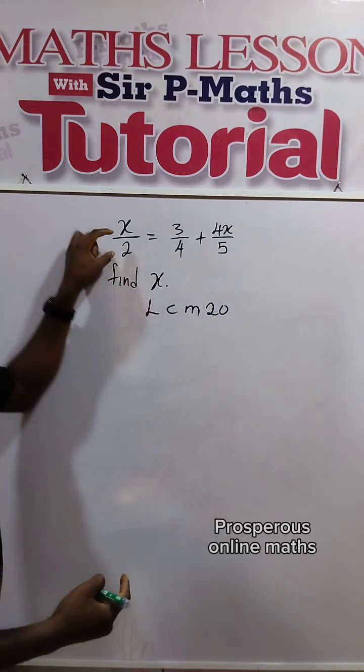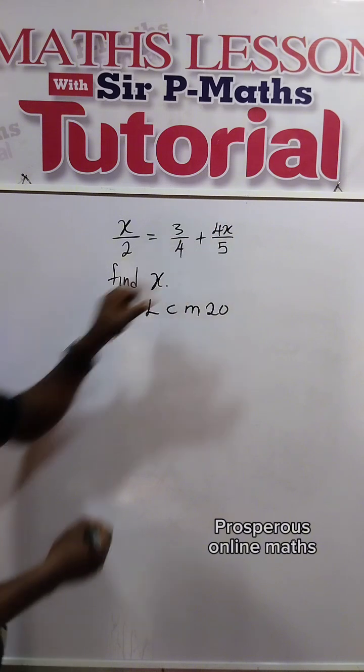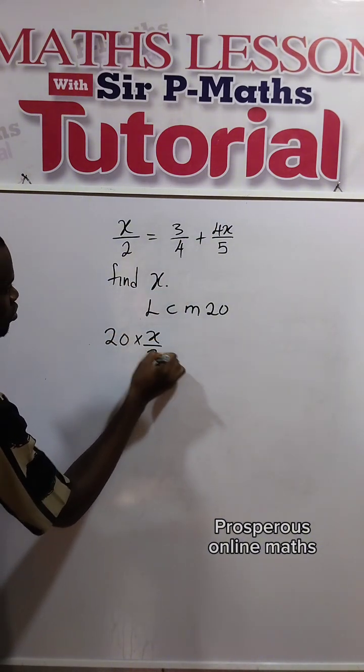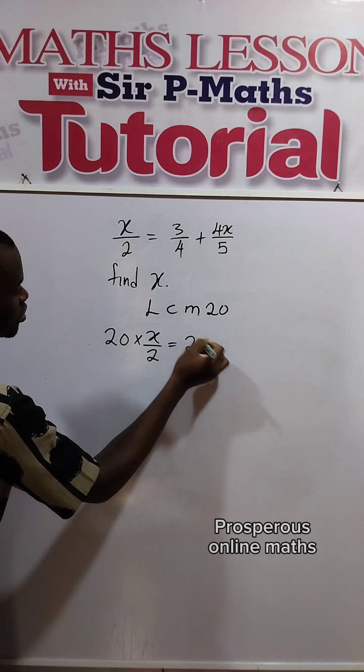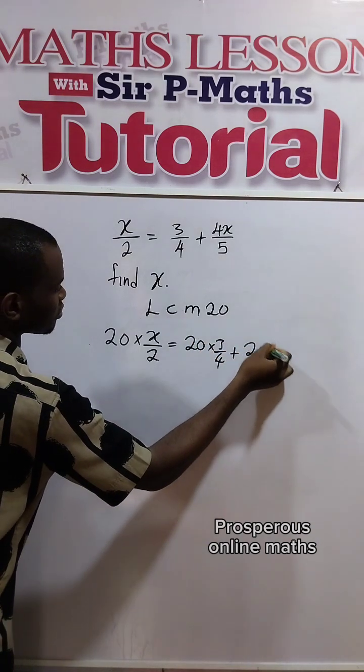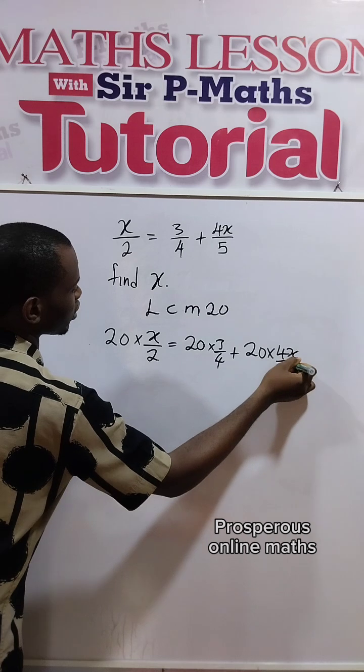Now use 20 and multiply each of these fractions. We are going to say 20 times x over 2 equals 20 times 3 over 4 plus 20 times 4x over 5.